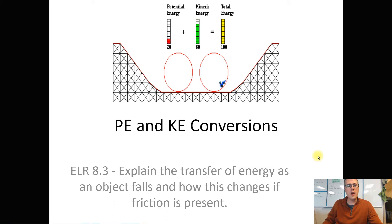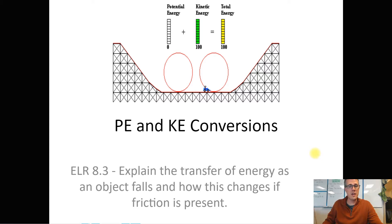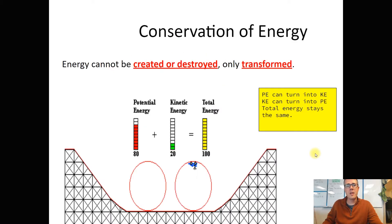Hello 8th graders, this video is for ELR 8.3, which is PE and KE conversions. In this lesson, you're going to learn how to find a missing variable when we only know one thing about an object, whether that be how high up it is or how fast it's moving. And we're going to use something called the Law of Conservation of Energy in order to do that.